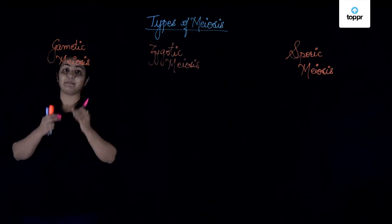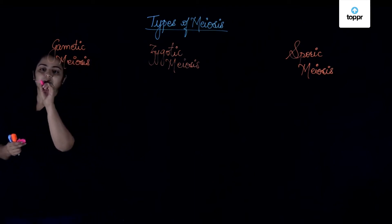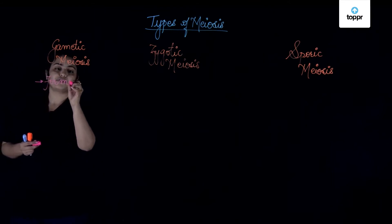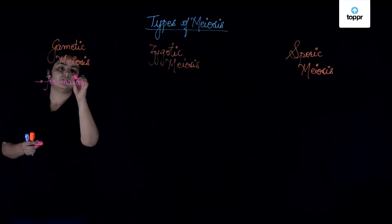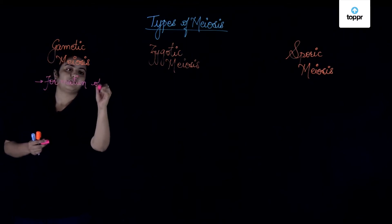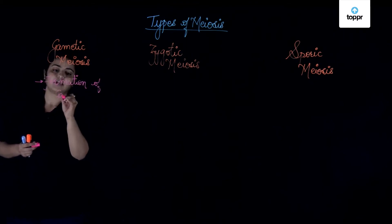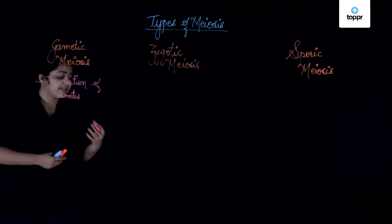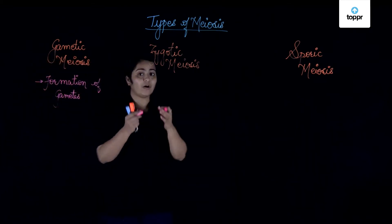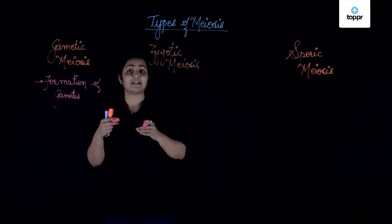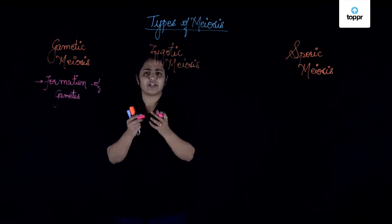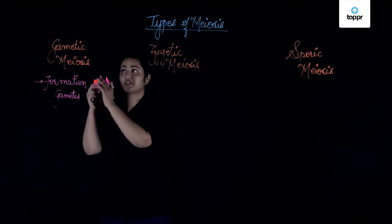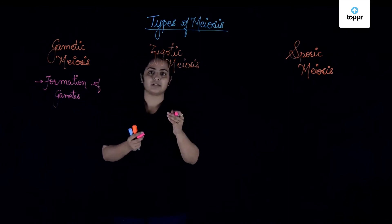As the name says, gametic meiosis means the process of meiosis which happens for the purpose of formation of gametes in higher organisms. All the animals and all the plants have these specialized reproductive cells called gametes. Formation of these gametes happens through the process of gametic meiosis.